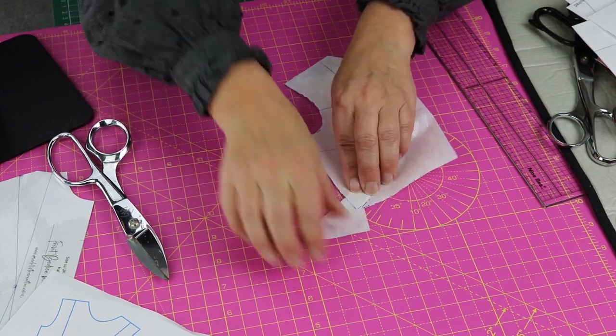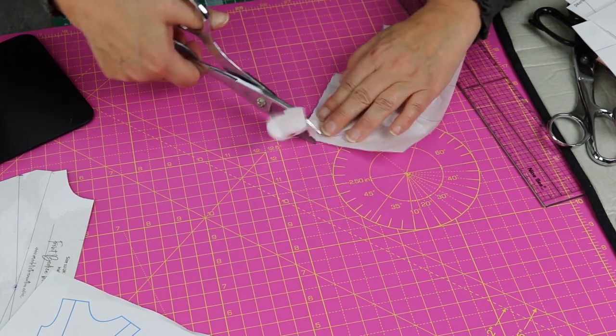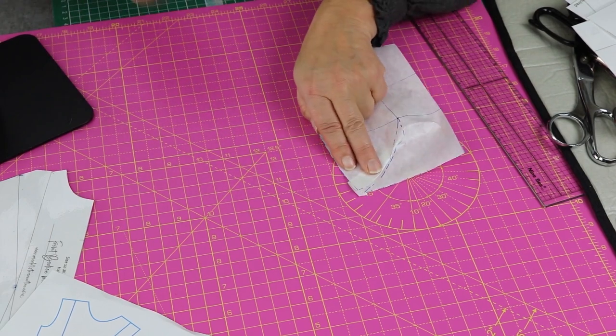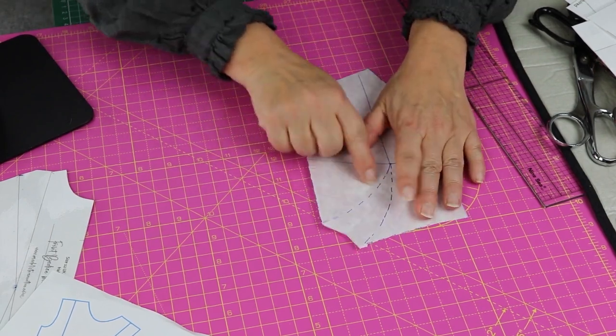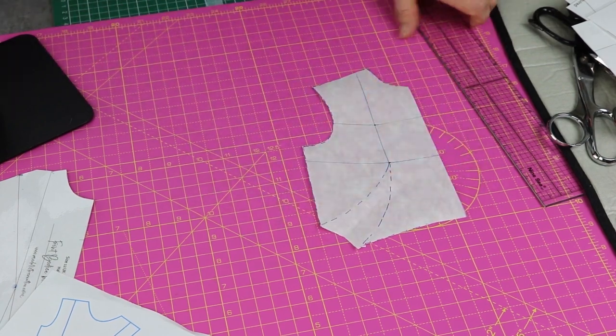If you wanted to fold in the dart and cut the shaping, this is what you would do. So you cut the rest of the pattern out while the dart was folded in. But there's a vast expanse of fabric there.